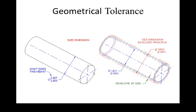Now let us see what different MMC and LMC examples are available. The basic size of the shaft has tolerances of 2.007 and 2.003. The LMC — least material condition — is the smallest value, that is 2.003. And MMC is 2.007; the red one shows the MMC. The component should fall between this blue line and red line — that is LMC and MMC. This is called the envelope of the size, which is represented in the form of geometric tolerances.